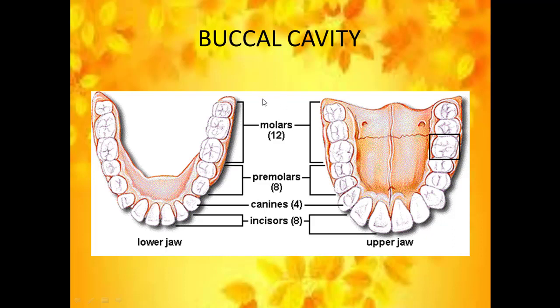Before learning the digestive system, we will have to know the parts of the buccal cavity. We have two jaws in our buccal cavity — the lower jaw and the upper jaw. In our lifetime, we will have two sets of teeth. The first set is the milk teeth and the second set is called the permanent teeth. The milk teeth start growing at the age of eight months in infants and last up to seven or eight years. The permanent teeth are 32 in number.